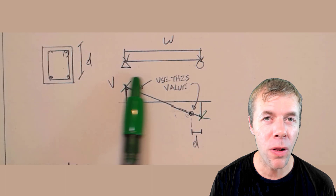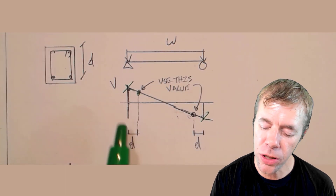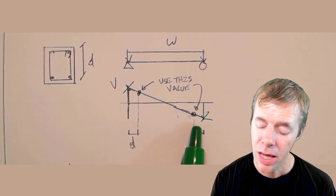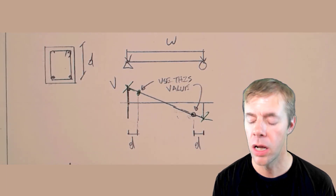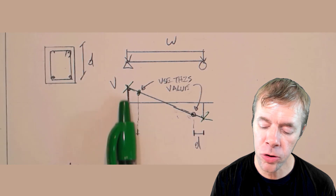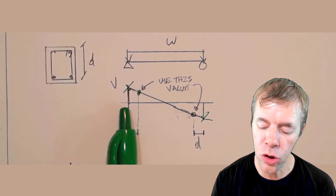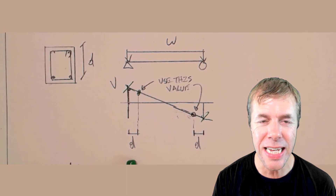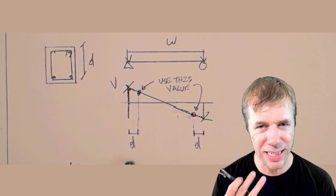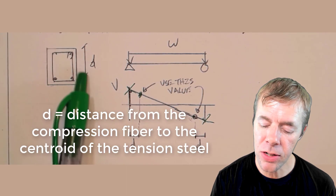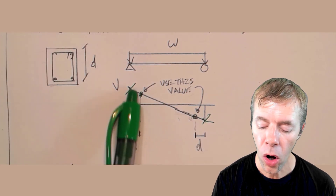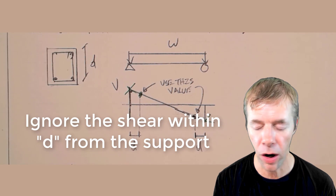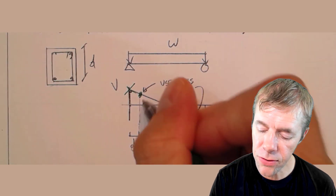This means that if I have a beam with a load on it, and if I drew a shear diagram like this, then I don't actually have to design for the max amount of shear at the edges. I can ignore any shear that's within D of the supports. D is the distance from the compression fiber to the centroid of the tension steel. I can ignore all of the load there and design for the reduced values.